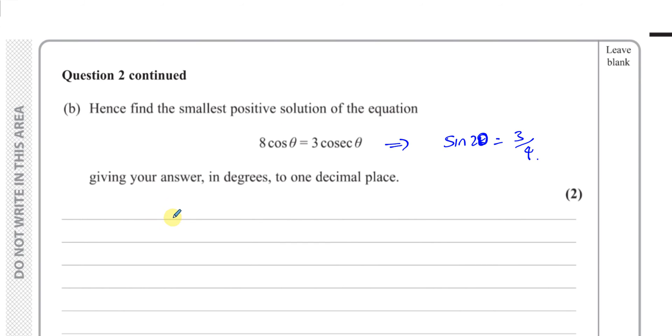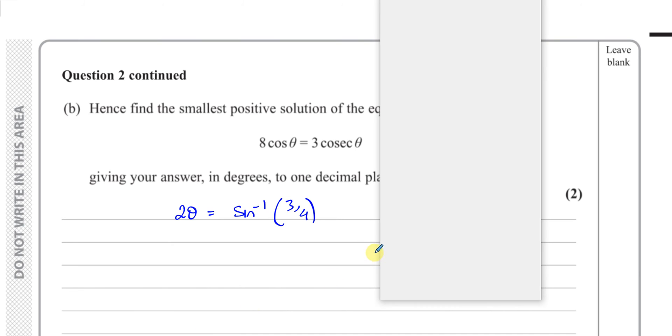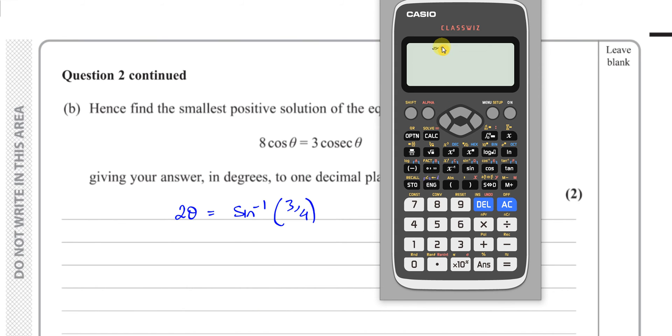So first thing we're going to do is we're going to find what 2θ is. So 2θ is equal to the inverse sine of 3 quarters. Now we want ourselves to be in degree mode, so we make sure that our calculator is in degree mode, which it is. If it wasn't, you would go shift, menu, angle unit, and change it to degree mode. Well it's already in degree mode, that's fine. So I want to find the angle which has the ratio for sine of 3 quarters.